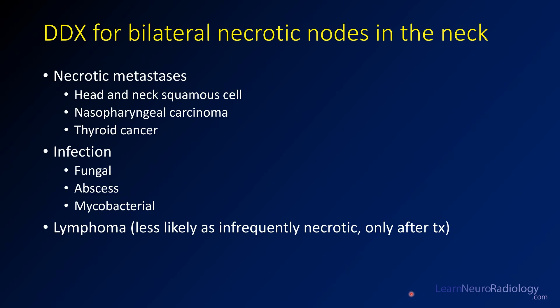When you have bilateral necrotic nodes in the neck you need a differential diagnosis, because you're not always going to be able to tell the abnormality. The most common thing is going to be a squamous cell malignancy of the head and neck, like tonsillar malignancies. Nasopharyngeal carcinomas can also cause necrotic nodes in the neck. Thyroid cancers can sometimes, although the nodes may often be more solid.